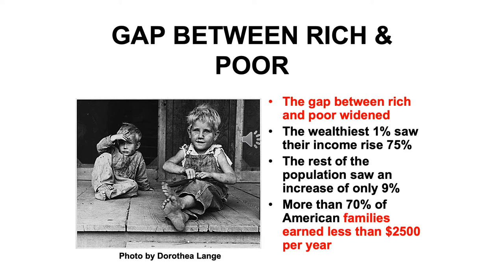The reason it matters is that our economy has traditionally been a consumer economy. In the 1920s and today, about 70% of our economic growth is based on consumers buying goods and services. So if people have less money to spend, there's not as much demand. Think of it this way: if there are 1,000 rich people and 10,000 everybody else,